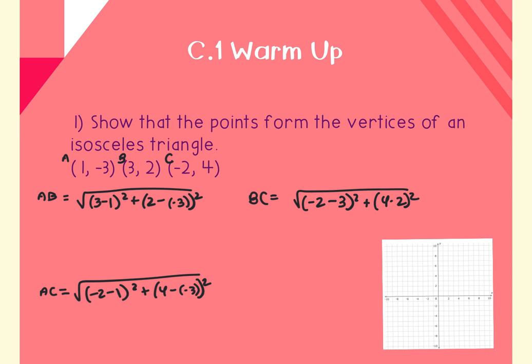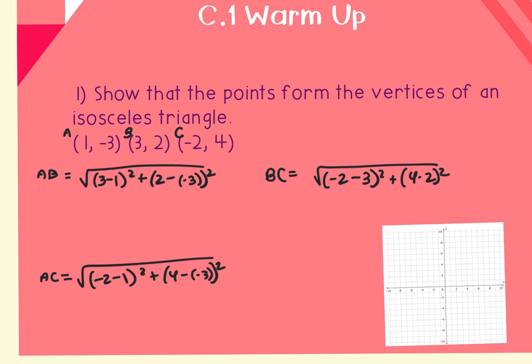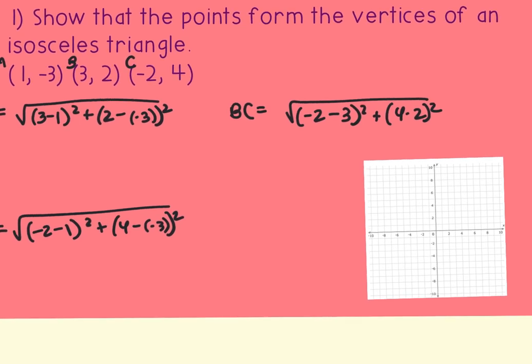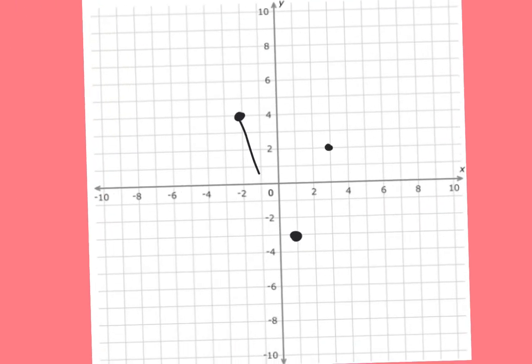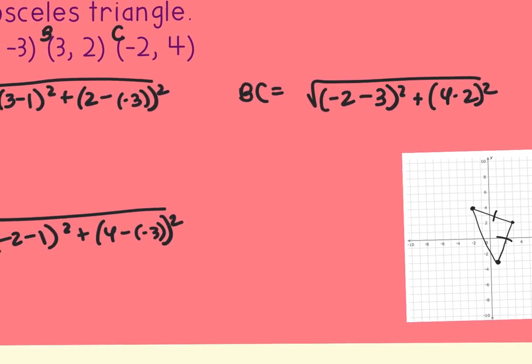You're going to go through the process of finding all three sides. If you had actually graphed it, you might have been able to spot that two of the sides looked like they were about the same length, and that helped identify it. So I'm going to label the points: (1, -3), (3, 2), and (-2, 4). It appears these two are the ones close in length, so I could have tested those first.